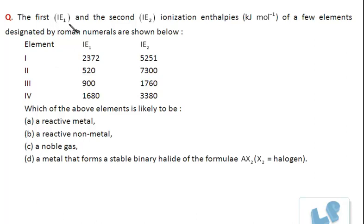The first ionization energy and the second ionization enthalpy in kilojoule per mole of a few elements designated by Roman numerals are shown below. These are elements 1, 2, 3, 4. Their ionization enthalpies IE1 and IE2, that is first ionization enthalpy and the second ionization enthalpy.